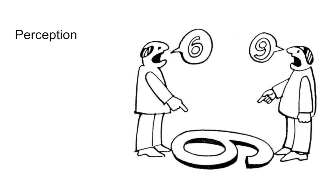Perception is very much in the eye of the beholder. This little graphic of the six or the nine really depends on how you look at things. Perception is about your perspective on things, and your perspective is one. People on the other side perceive things quite differently, and that is one of the challenges from an organizational point of view — not everyone perceives the same thing the same way.